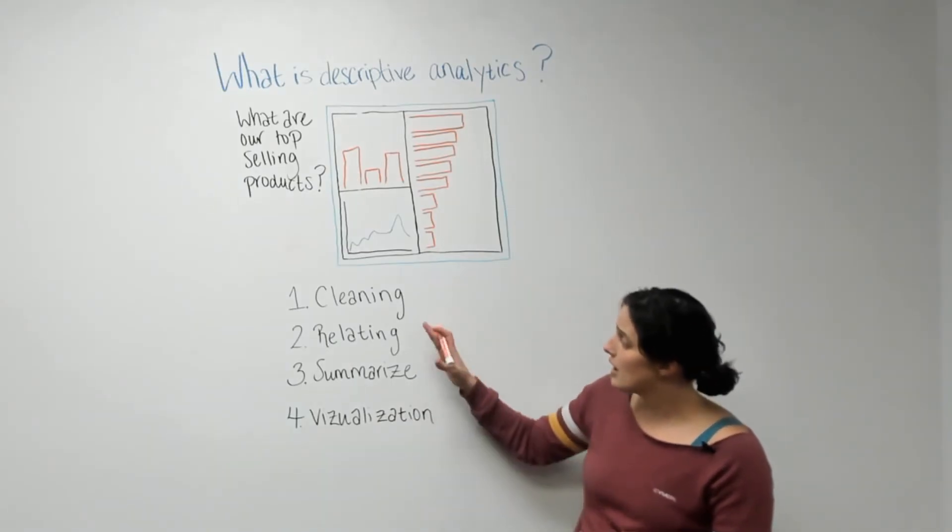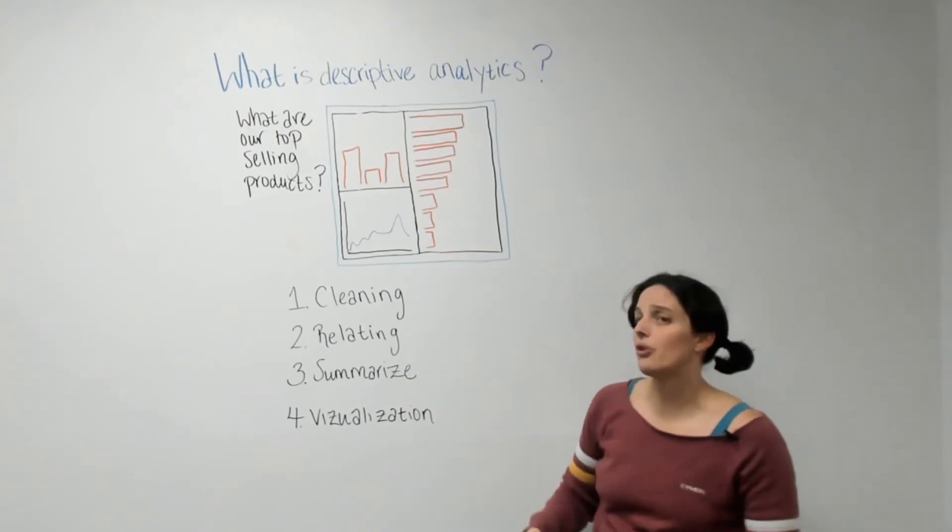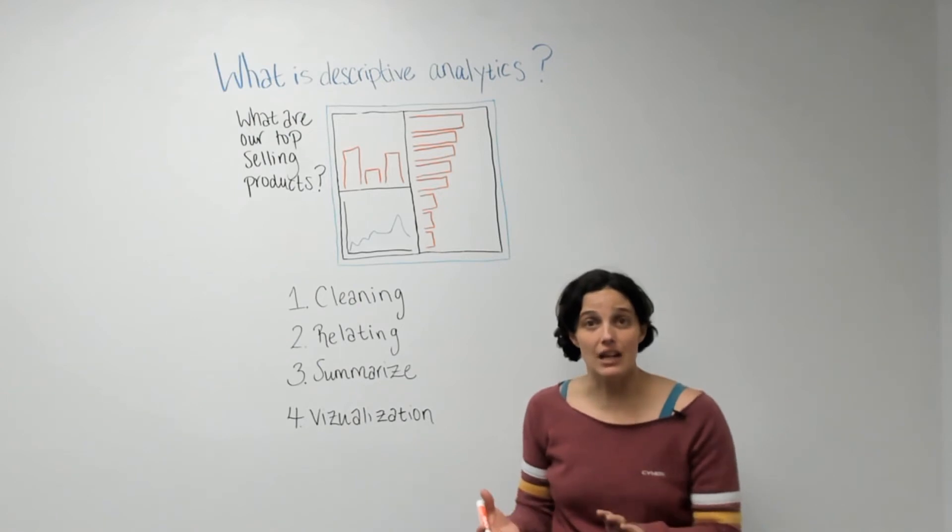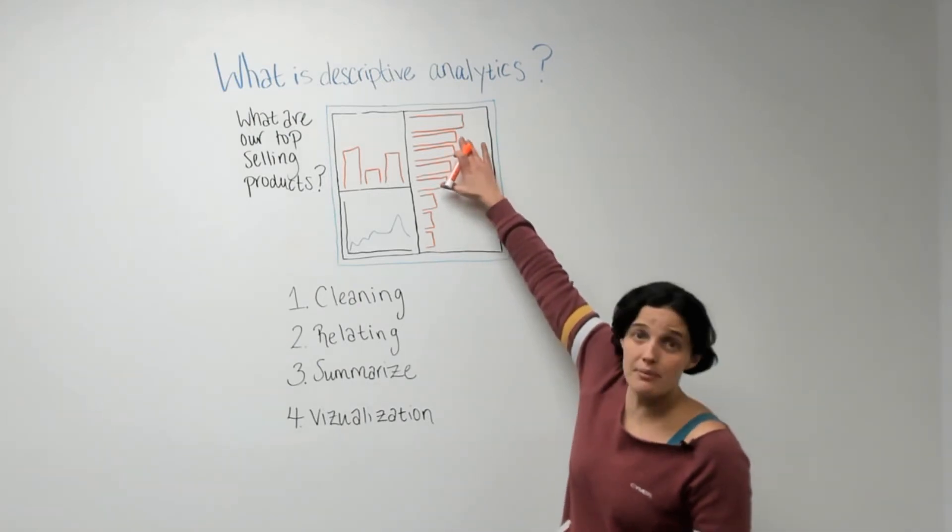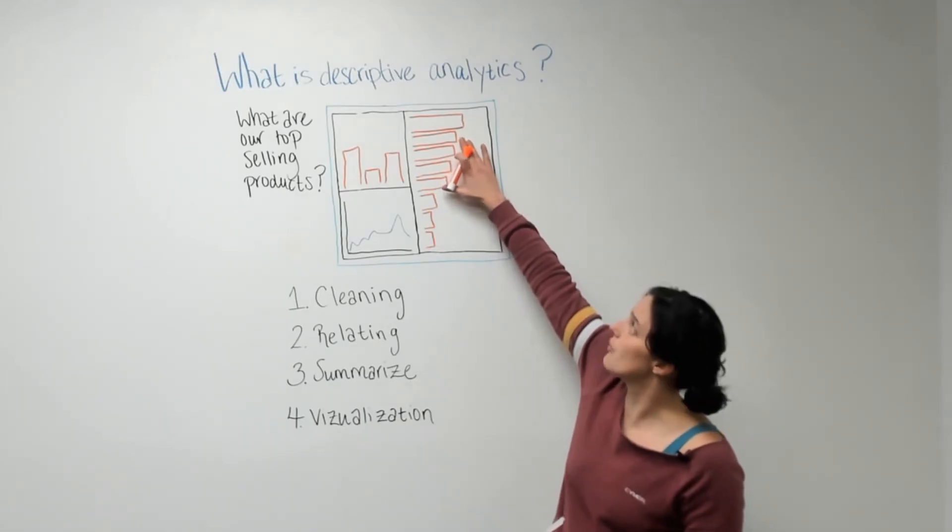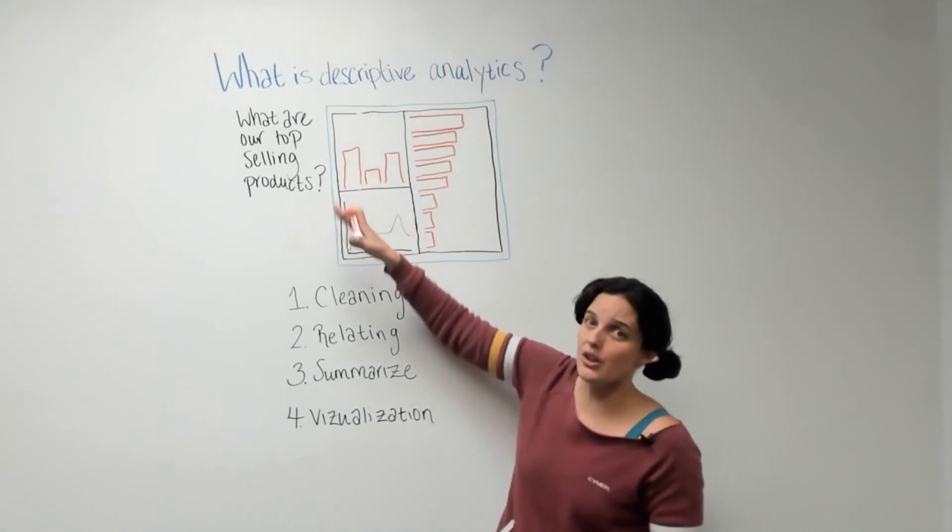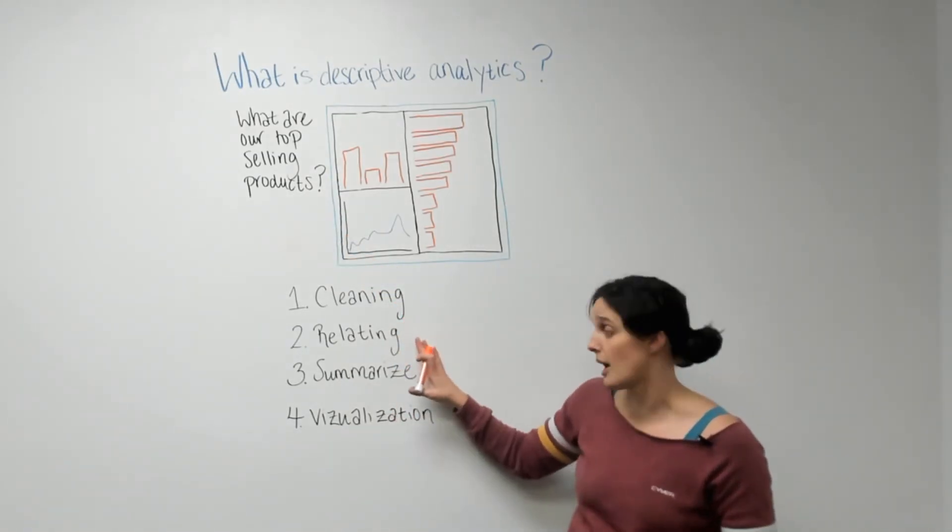So then the next thing down is relating. A dashboard like this could be built on one table, it could be built on hundreds of tables. But you need to know how all of that data is related. For example, if you have Captain Crunch up here, you need to know that Captain Crunch belongs to the pantry category. And the only way that you do that is by relating those different pieces of data together. So that's a really crucial step.